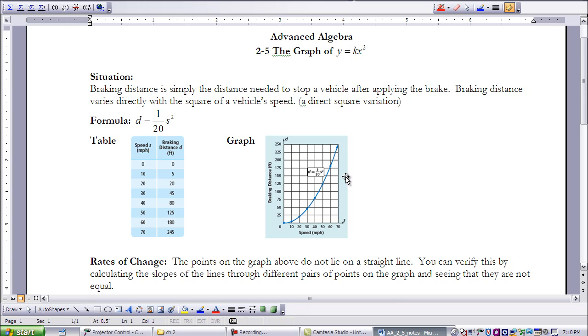When we looked at direct variations, we had a constant rate of change. Our value for k represented the slope of a line. But when we look at direct squared variation, we won't find the same thing. The points in the graph above do not lie in a straight line. You can verify this by calculating the slopes of the lines through different pairs of points on the graph and seeing that they are not equal.